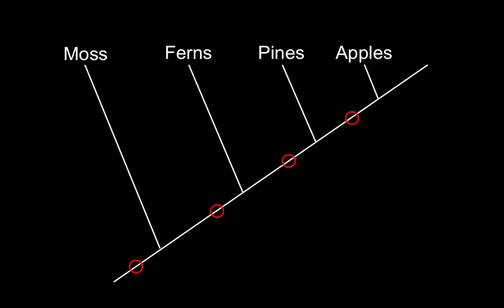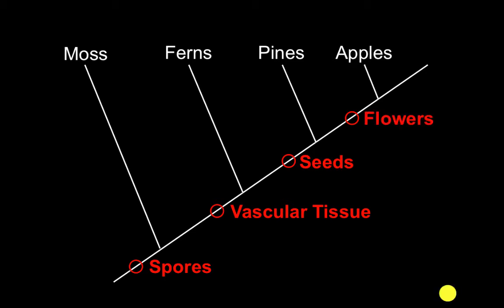If we look at this in a phylogenetic tree — the evolution of these various adaptations — first we have spores, so moss is a spore plant. Then, going back a little bit, we have vascular tissue, because ferns are a vascular plant but they also have spores. Then we get seeds, and pines are gymnosperms. And then finally we get flowers.